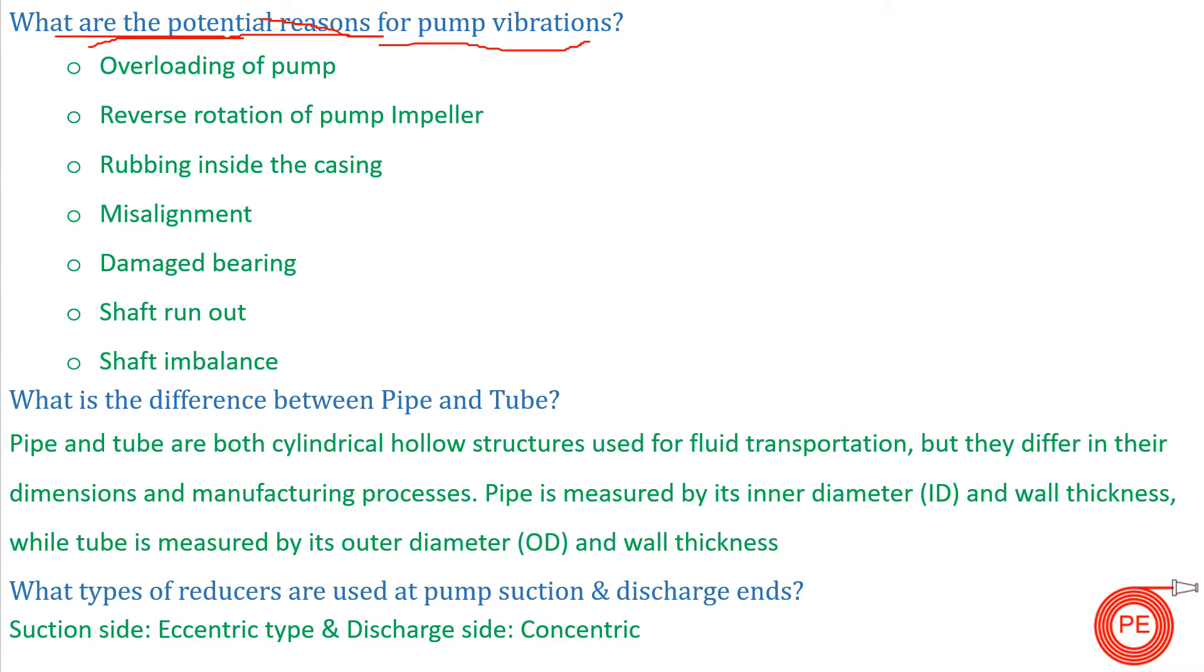Overloading of a pump, reverse rotation of the pump impeller, rubbing inside the casing, if your pump is misaligned, if your shafts are misaligned, if your bearing is damaged, if your shaft is imbalanced—all these things and one of the important reasons is if there is cavitation inside your pump. All these account for pump vibrations, and pump vibrations can lead to pump failure, bearing failures, and a number of problems.